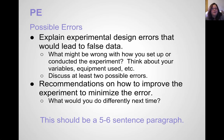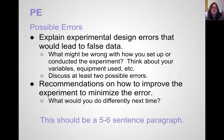The P, the second paragraph of your conclusion, is for Possible Errors. Here you're going to explain experimental design errors that might lead to false data. Think about all the things that could have gone wrong with how you set up or conducted the experiment. Think about your variables — did you only change one variable at a time and keep the rest constant? Did you use your equipment correctly? Did you use the right equipment? Did you use the right measurements?